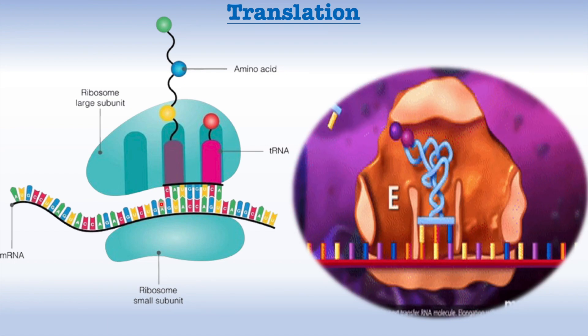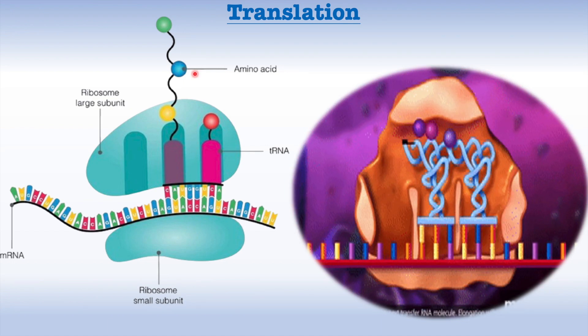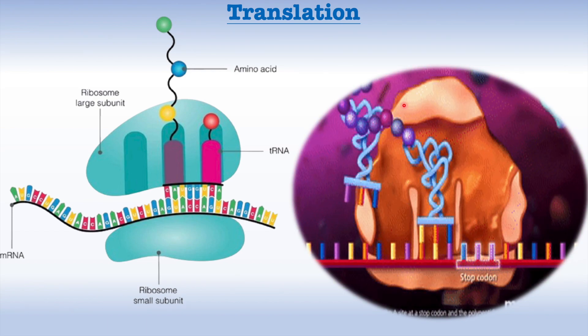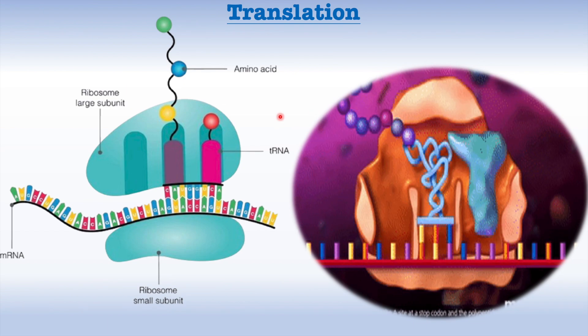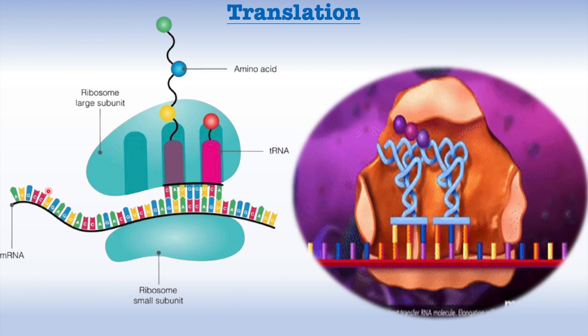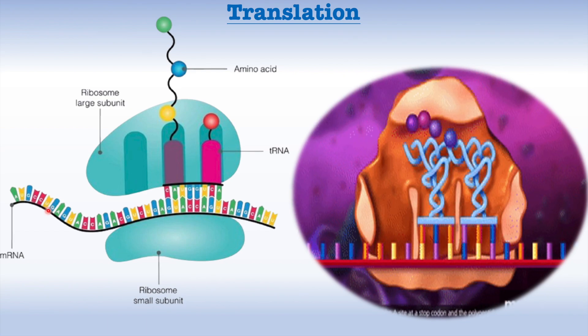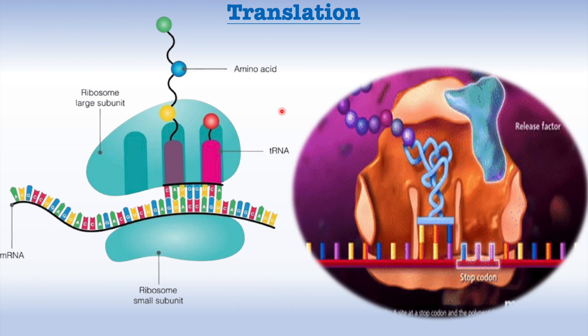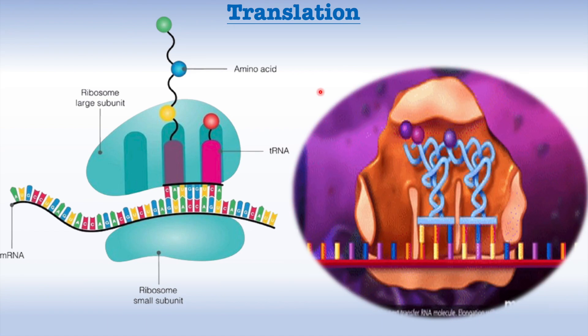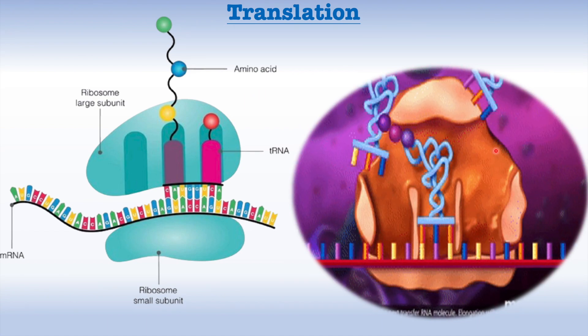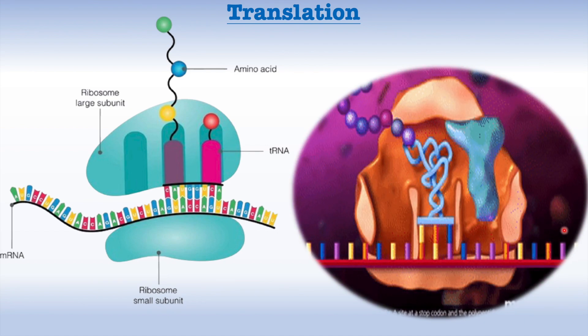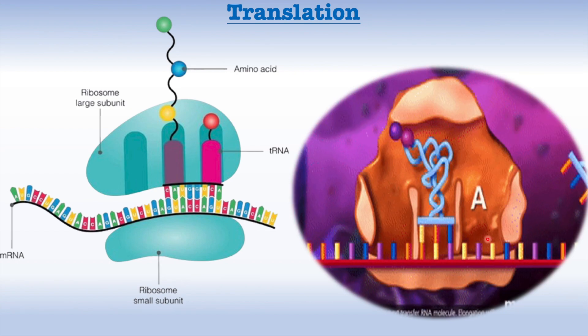In elongation, tRNAs bring amino acids to the ribosome, matching their anticodons with messenger RNA codons, and the ribosome links the amino acids to form a growing polypeptide chain as clear here. Termination happens when a stop codon is reached, signaling the release of a completed protein.